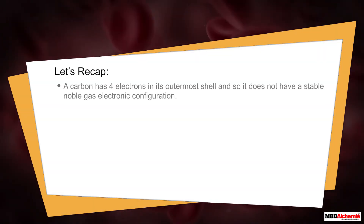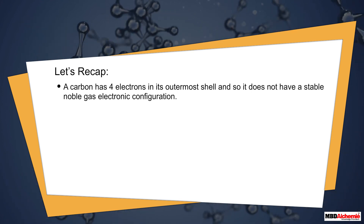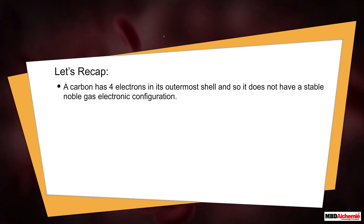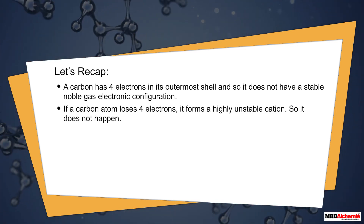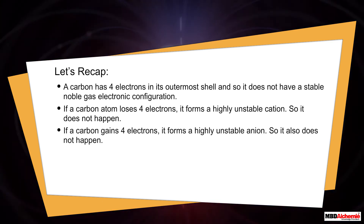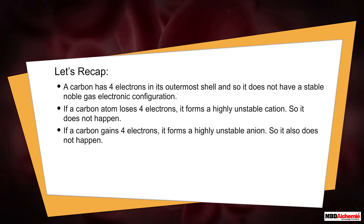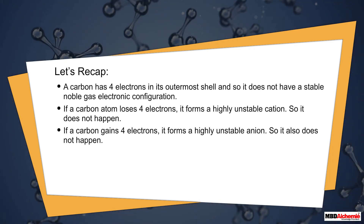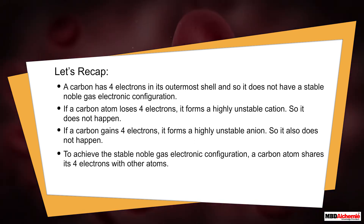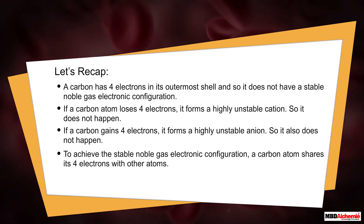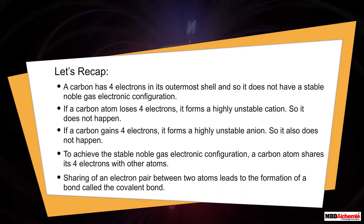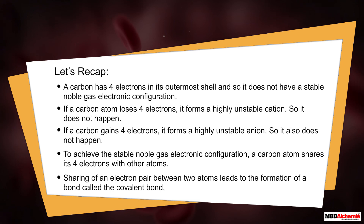To recap: carbon has four electrons in its outermost shell and does not have a stable noble gas electronic configuration. If a carbon atom loses four electrons, it forms a highly unstable cation, so that does not happen. If a carbon atom gains four electrons, it forms a highly unstable anion, so that also does not happen. To achieve stable noble gas electronic configuration, a carbon atom shares its four electrons with other atoms. The sharing of an electron pair between two atoms leads to the formation of a bond called the covalent bond.